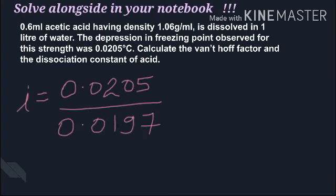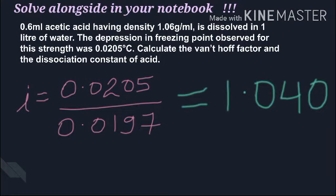What is i? i = observed colligative property / normal colligative property. Observed is 0.0205, calculated is 0.0197. If you solve this, the value is around 1.040. So the first part is done.